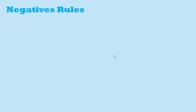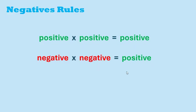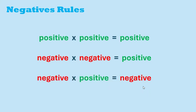Now let's review negative rules for multiplying numbers. Two positive numbers gives a positive answer. Two negative numbers also gives a positive answer. But a negative times a positive gives a negative answer.